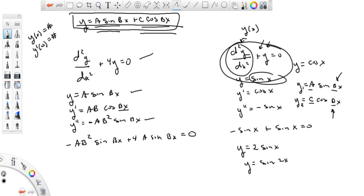Okay, now we just do a little bit of factoring. We can factor out a and a sine of bx. And then we're left with minus b squared plus four equals zero. Now when we look at this equation, there are three possibilities. Possibility number one, perhaps a is equal to zero. But a cannot be allowed to be zero because this is our solution.